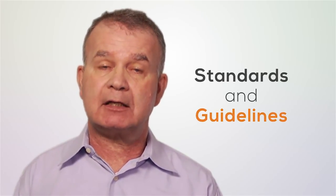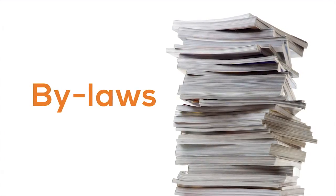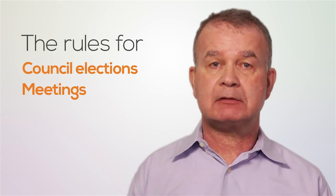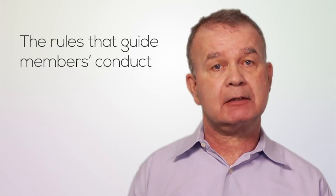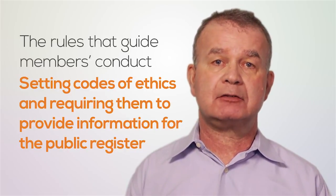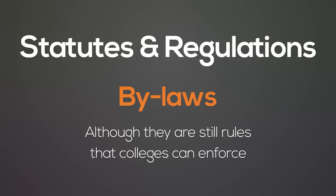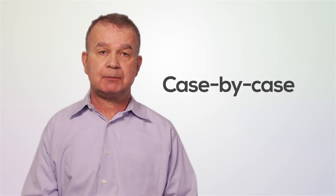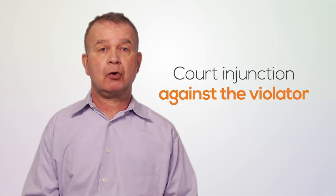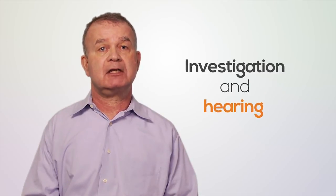This brings us to bylaws. The authority each profession has to make bylaws is similar to the authority it has to make regulations, which promotes consistency in the model. The authority that colleges have to make bylaws is quite far-ranging, including establishing the administrative processes for colleges such as banking, finances, and audit; the rules for council elections, meetings, committee composition, and councillor conduct; the rules that guide members' conduct including codes of ethics and requiring them to provide information to the public; and the setting out of registration fees. In the order of legislative priority, bylaws fall below statutes and regulations, although they are still rules that colleges can enforce. The decision on how to enforce bylaws is typically made on a case-by-case basis — a common enforcement mechanism is the use of a court injunction against a violator, but the college's investigation and hearing process is another option.